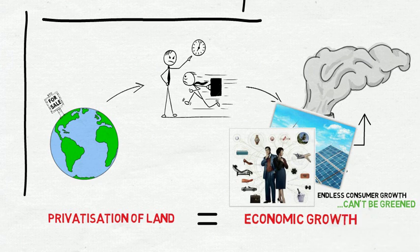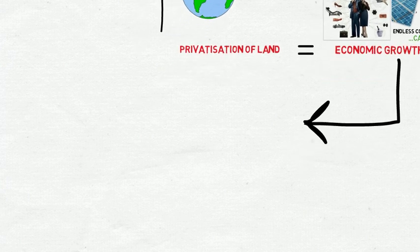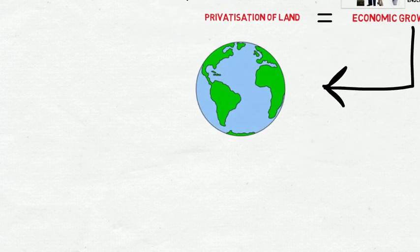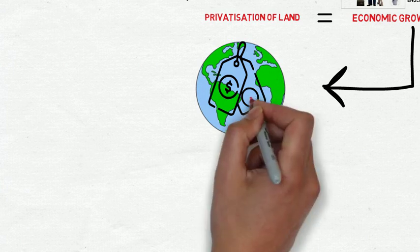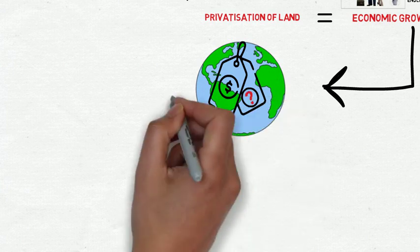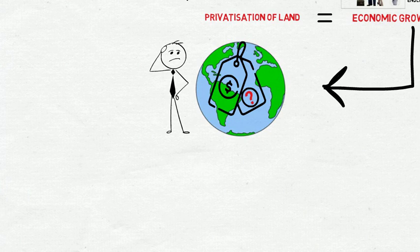So how could we find a way out of this unsustainable cycle? Well, stepping right back, the first thing we could ask is, why do we so unquestionably accept that land is private and has to be paid for? After all, land wasn't created by the market, or the state for that matter.